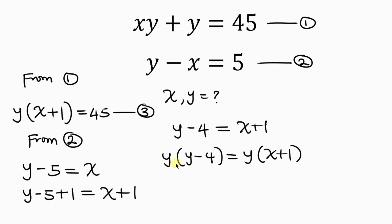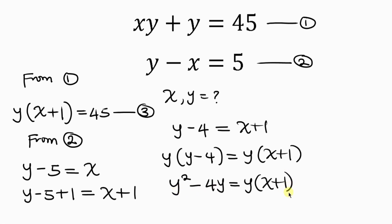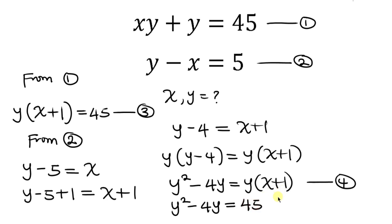Now let's open up this bracket. We have y times y, which gives y squared, minus y times 4, which is 4y, equal to y times (x plus 1). We can call this equation 4. Notice that y times (x plus 1) in equation 3 is equal to 45, so we can substitute 45 here. So we have y squared minus 4y equal to 45.